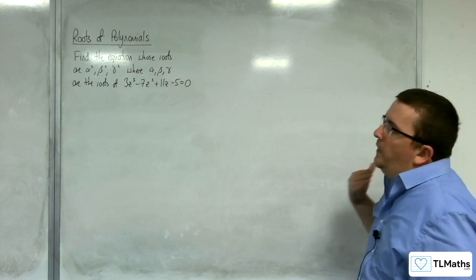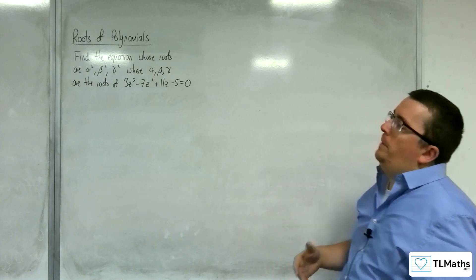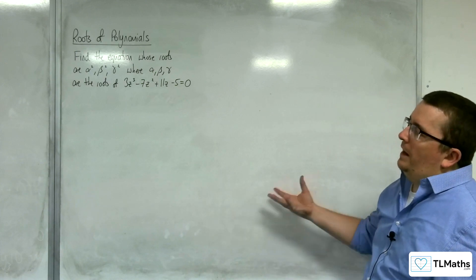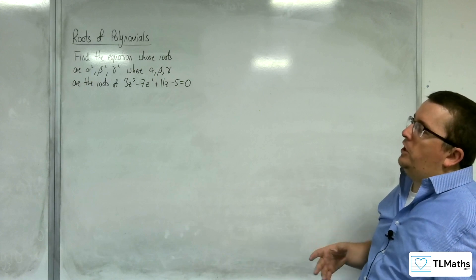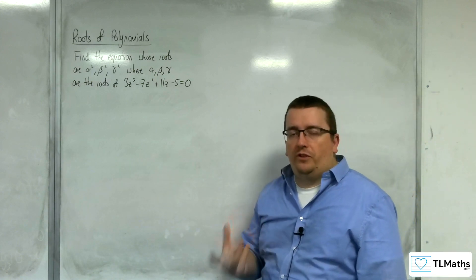In this problem, we need to find the equation whose roots are alpha squared, beta squared, and gamma squared, where alpha, beta, gamma are the roots of 3z³ - 7z² + 11z - 5 = 0.